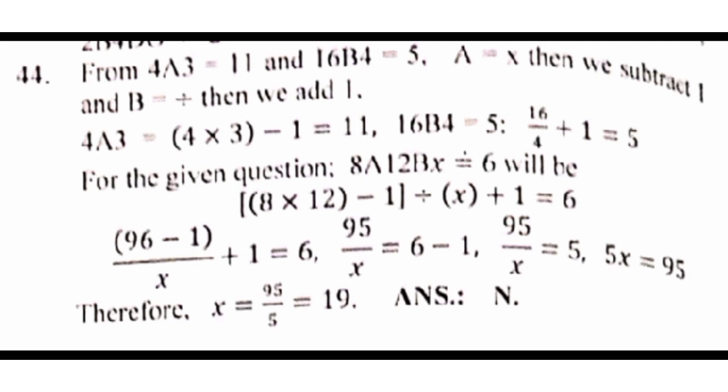So, from the equation, I have 8a12bx. That means, equals to 6. We'll have, like, 8 times 12, minus 1, because it's multiplication. Then, we'll now have, divide by, because of the b,